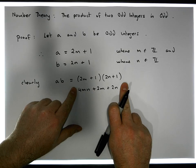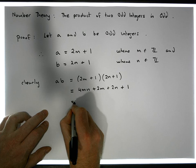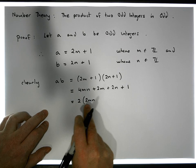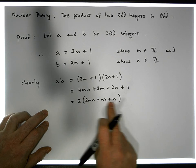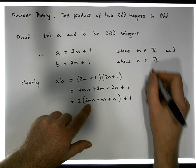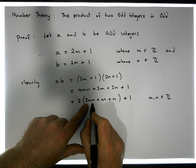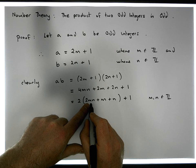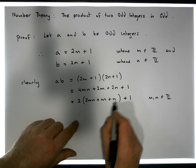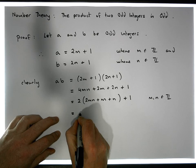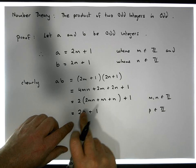Looking at this expression, we can see there is a common factor of 2 across these terms. So this equals 2 times (2mn + m + n) plus 1. We know that m and n are elements of the integers, so their product is an integer; 2 times an integer is an integer; and adding integers gives an integer. So this term in parentheses is an integer.